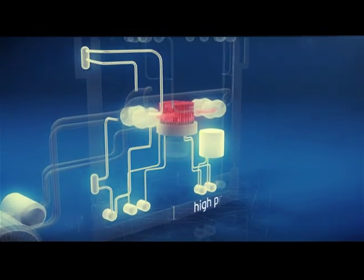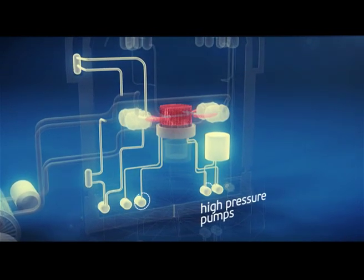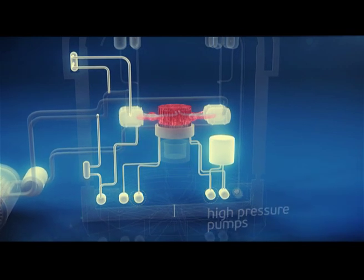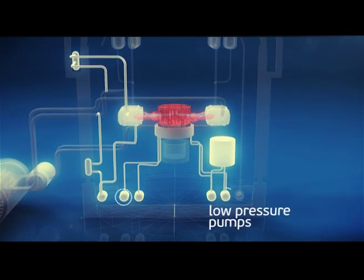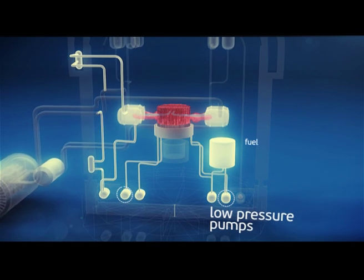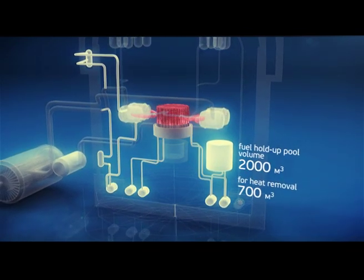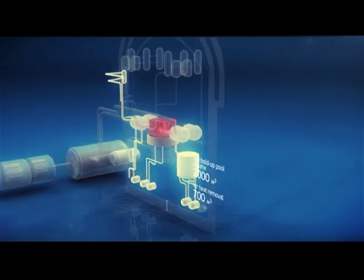The spent fuel holdup pond is more than 2,000 cubic meters, of which 700 cubic meters can be used for heat removal of the primary circuit. Power supply of the active safety systems is independent owing to backup diesel generators which are started automatically without human involvement in cases of power loss.